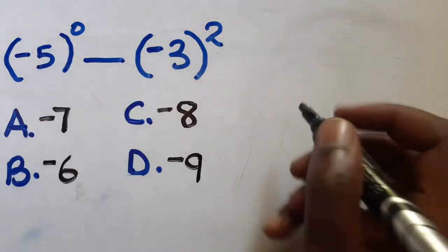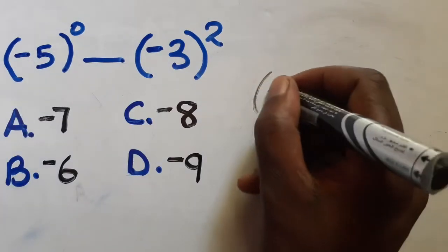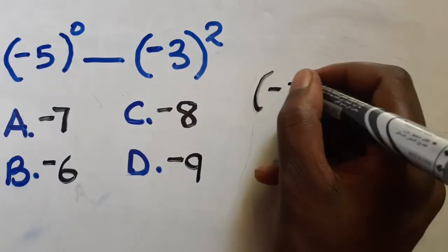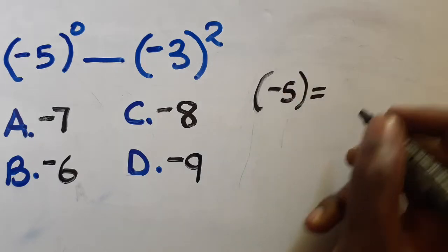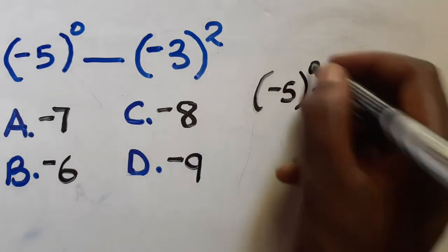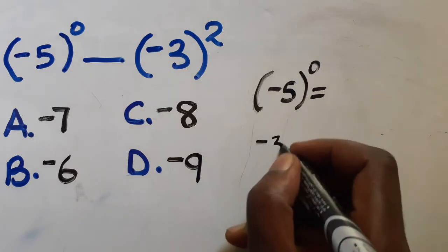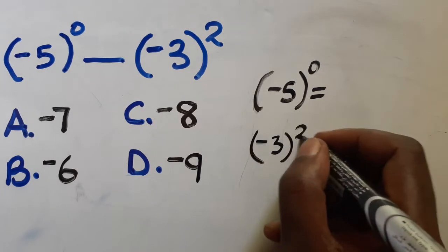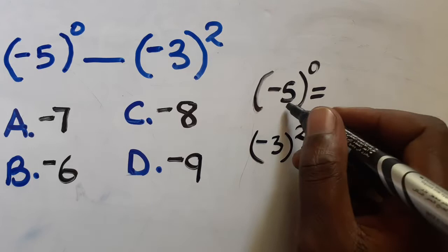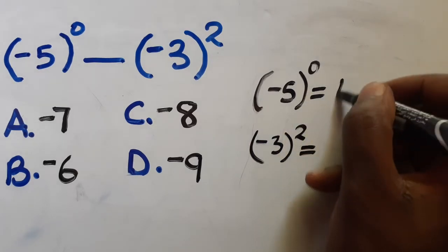Let's dismantle it. What do I mean? Let's get negative five. What does it give us? Negative five to the power zero. Then we get negative three to the power two. So you know that any base raised to zero is equals to one.